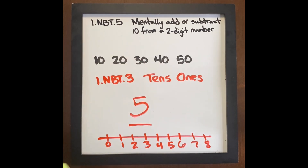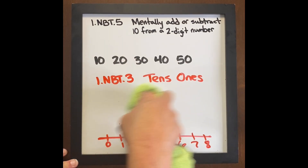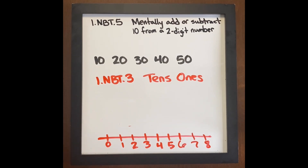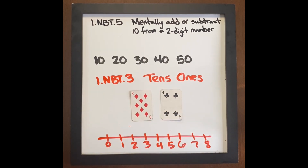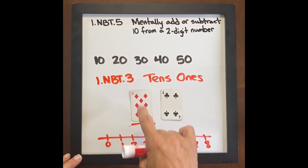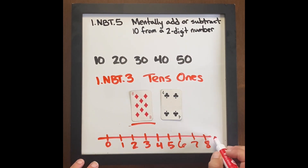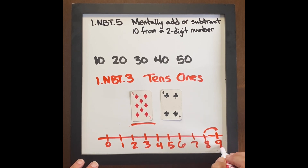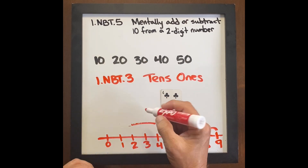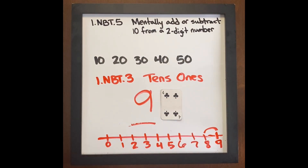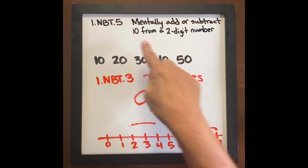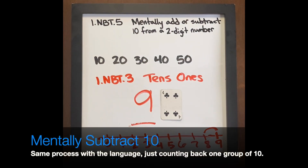Let's try it again with another one. Cards are very, very powerful. We have 8 tens, 4 ones for 84. We're only going to focus on the tens because we're mentally adding just 10 more. So after 8, the neighbor number for 8 is 9 — we're just jumping 1 group of 10. So now we have 9 tens, which becomes 9 tens, 4 ones: 94. So I'm still using that language — tens and ones — to help students mentally add and subtract 10 from a two-digit number.